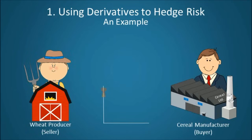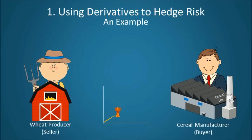If the price of wheat falls, the cereal manufacturer or buyer will wish that they hadn't signed the contract because they could be buying wheat for cheaper had they not signed it. Conversely, if the price of wheat rises, the producer or seller will wish that they hadn't signed the contract because they could be selling wheat for more money had they not agreed to their contract's terms.